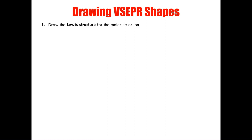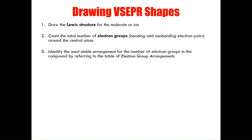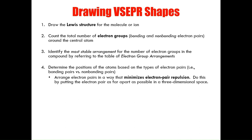There are five rules when it comes to drawing VSEPR shapes. First, draw a Lewis structure for the molecule or ion. Second, count the total number of electron groups — both bonding and non-bonding — around the central atom. Third, identify the most stable arrangement for that number of electron groups by referring to the table of electron group arrangements. Fourth, determine the position of the atoms based on whether the electron pairs are bonding or non-bonding. The goal is to arrange electron pairs as far away from each other as possible to minimize repulsion.